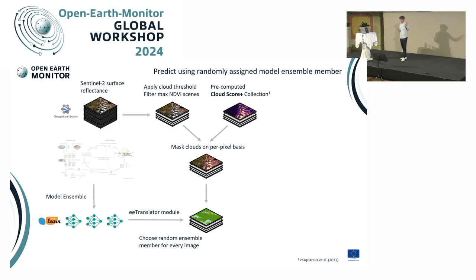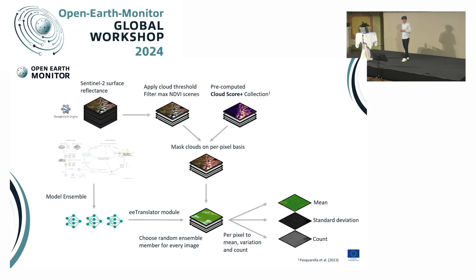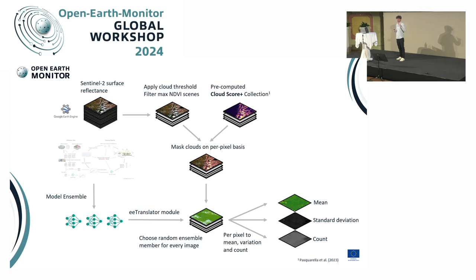One challenge is that you have to translate your model — implemented in scikit-learn — to actually predict on a Google Earth Engine asset. This was a bit of work, and we will share some code when we publish. Then you aggregate all the predictions into a mean, a standard deviation, and the number of observations per pixel. The uncertainty estimate captures both the variation across different Sentinel-2 tiles during peak vegetation phase and the disagreement between ensemble members.